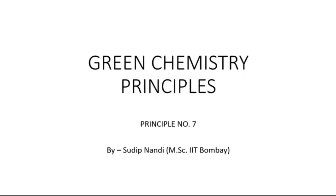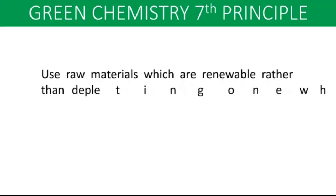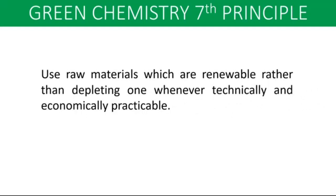In this class we will discuss one of the principles of green chemistry among the 12 principles, that is principle number seven. Principle number seven says: use of renewable feedstocks. So what does it mean by this term 'renewable'? Renewable means an unlimited source, or a particular material that cannot be depleted fast — you can say it has an endless supply.